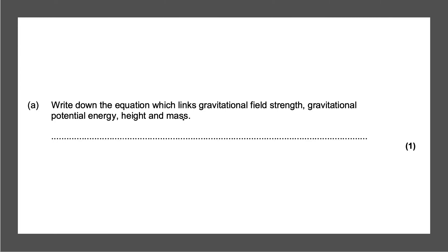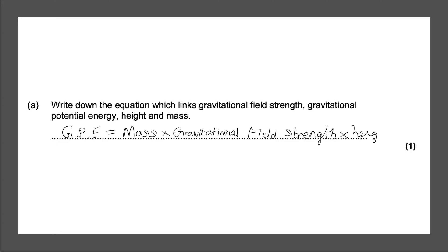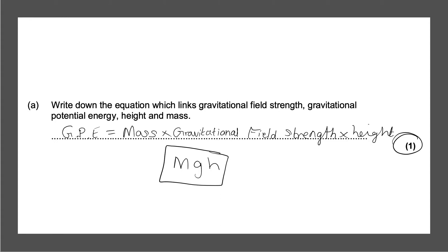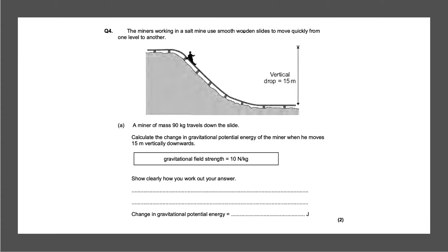Next question: write down the equation which links gravitational field strength, gravitational potential energy, height, and mass. The gravitational potential energy equals mass multiplied by the gravitational field strength multiplied by the height. A way I always remember this is MGH — M for mass, G for gravitational field strength, and H for height. The correct answer will give you one mark.